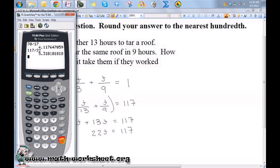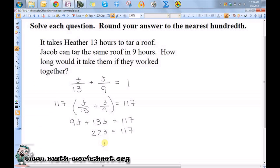117 divided by 22 is 5.32. So t is approximately equal to 5.32 hours.